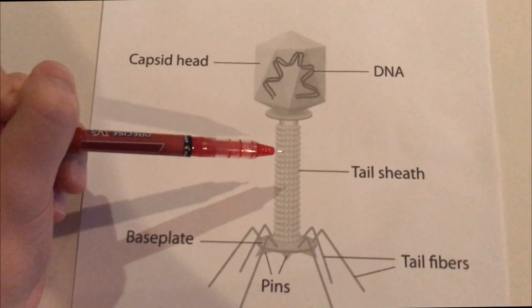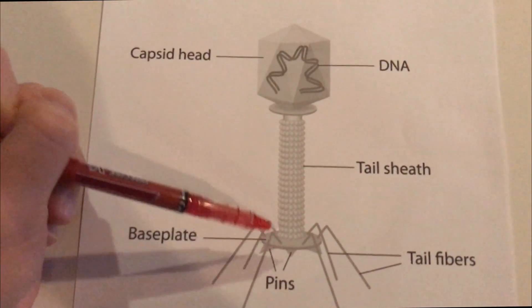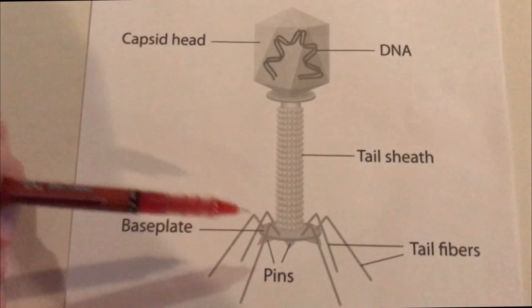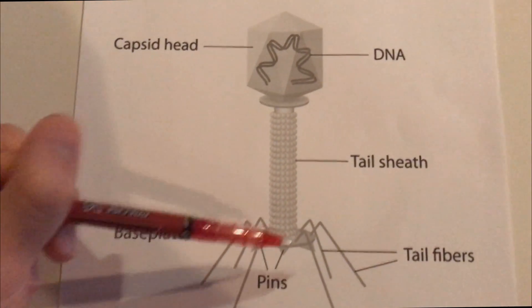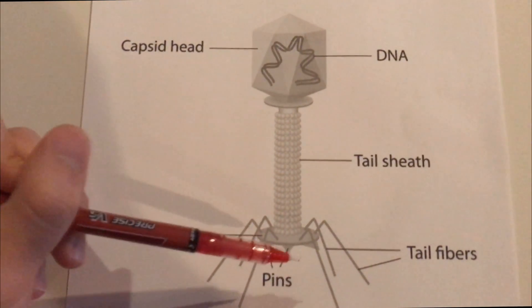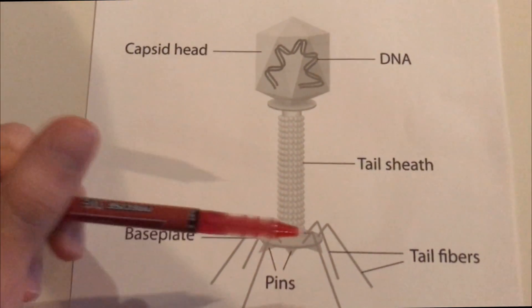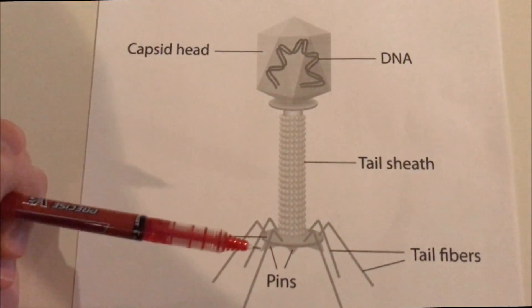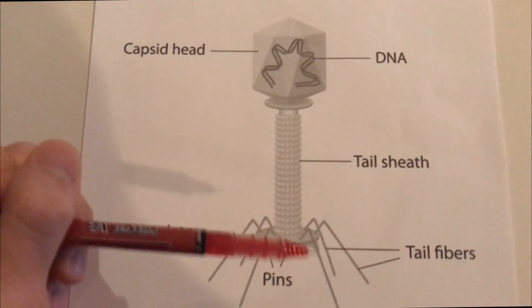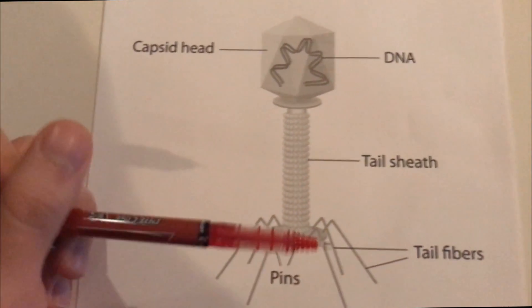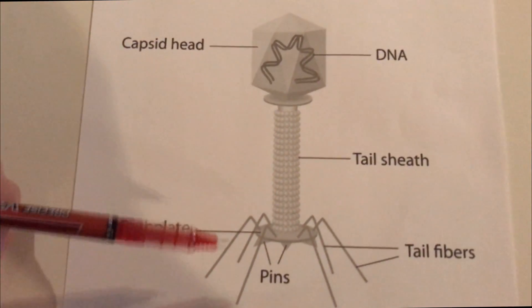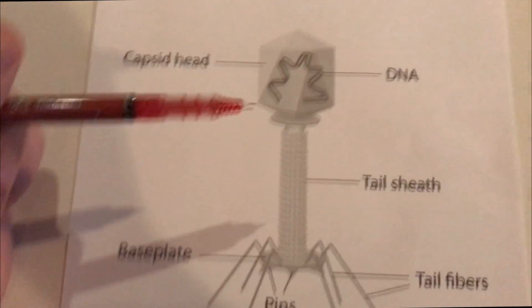They also have a tail sheath, which is this structure right here, a base plate, and pins, which they use when they attach to the bacteria, and tail fibers, which they use to uphold their entire structure.